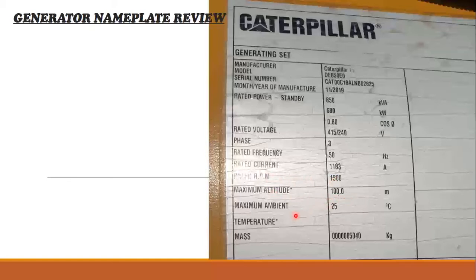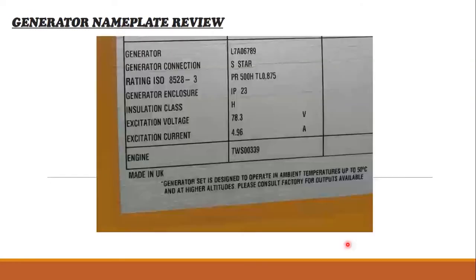Maximum ambient temperature the unit is designed for is 25 degrees Celsius. The mass is 5040 kg. The generator series is L7A06789. The generator connection is star, three-phase with one neutral.